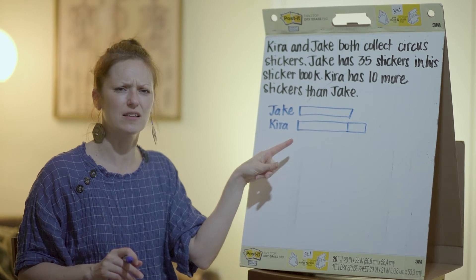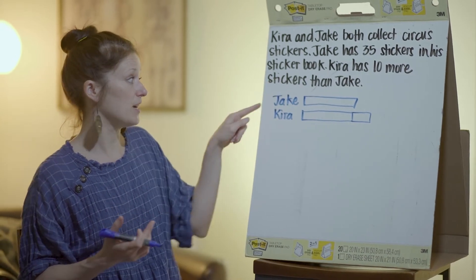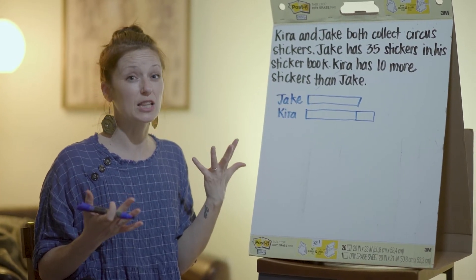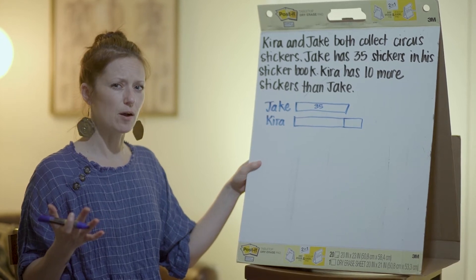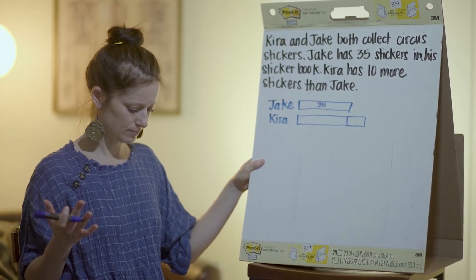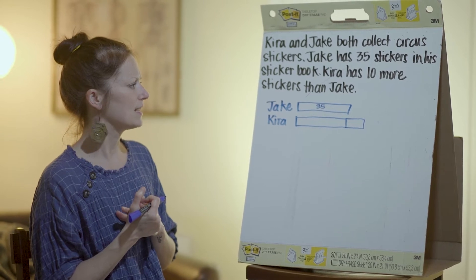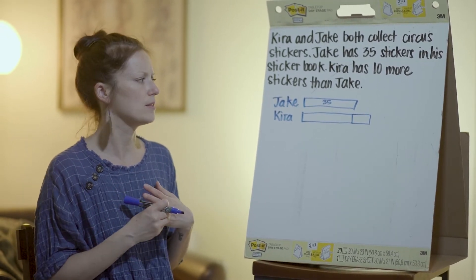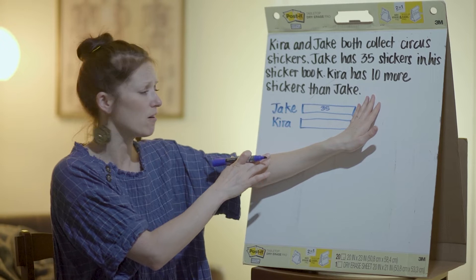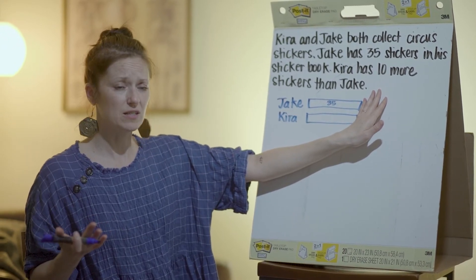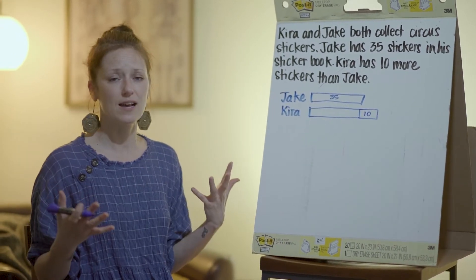What else can I add to this drawing to help us with the problem? Well, we know that Jake's bar is representing 35 stickers, so I could write in 35 here. We also know that Kira has 10 more. If both Kira and Jake had the same amount, the bars would be the same length — but we know she has 10 more, so I could draw in a 10 here representing that Kira has 10 more stickers than Jake.